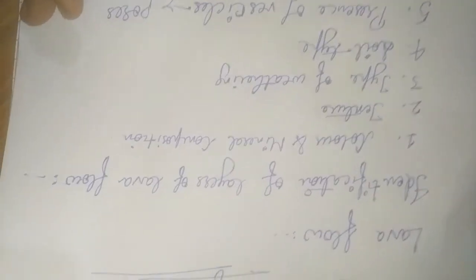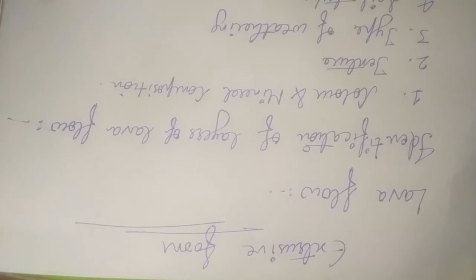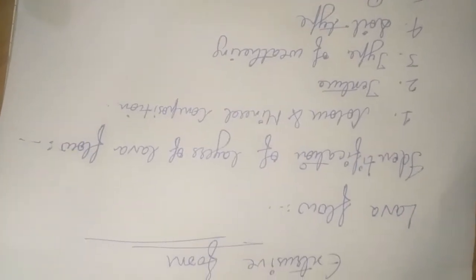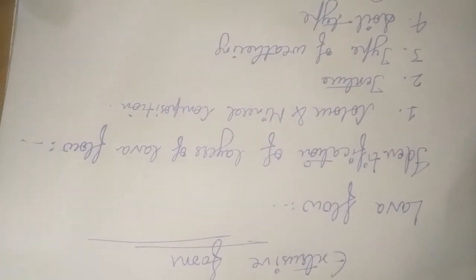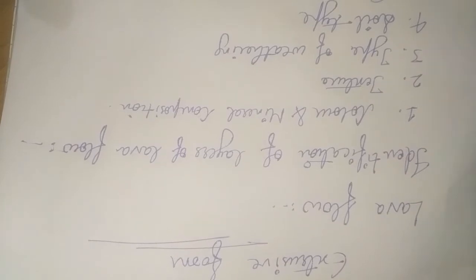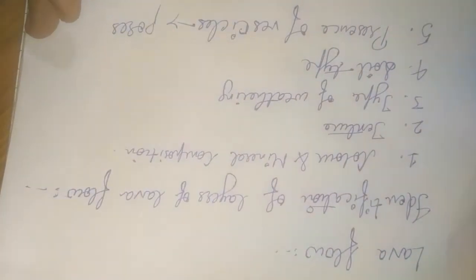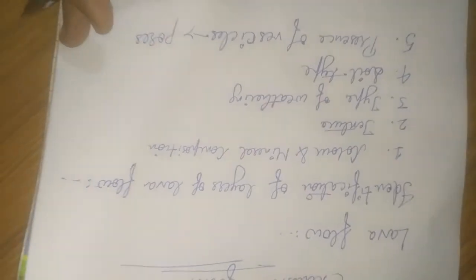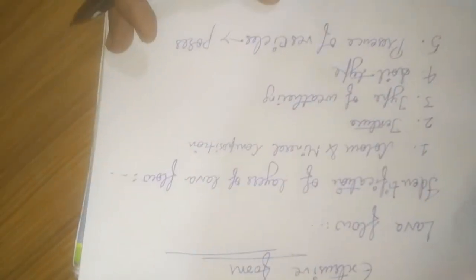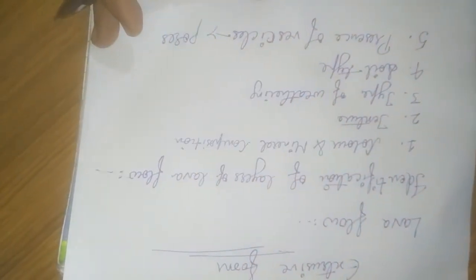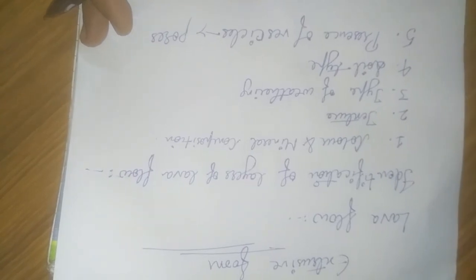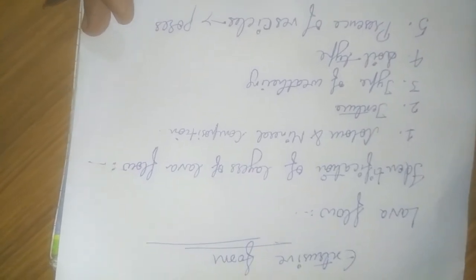So this was all about the extrusive form, which is made from lava flow. We can identify lava flow layers using these five points. It was a short but important topic, so just go through it. Please like, subscribe, and comment. Thank you.